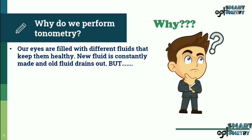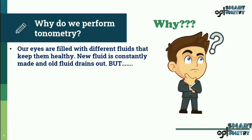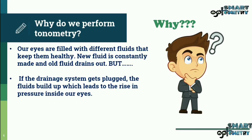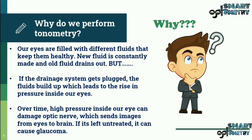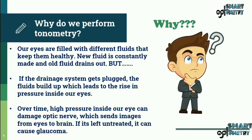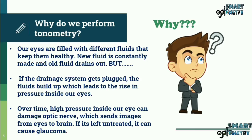New fluid is constantly made and old fluid drains out. But if the drainage system gets blocked, the fluids build up, which leads to a rise in pressure inside our eyes. Over time, high pressure inside our eye can damage the optic nerve, which sends images from the eyes to the brain.